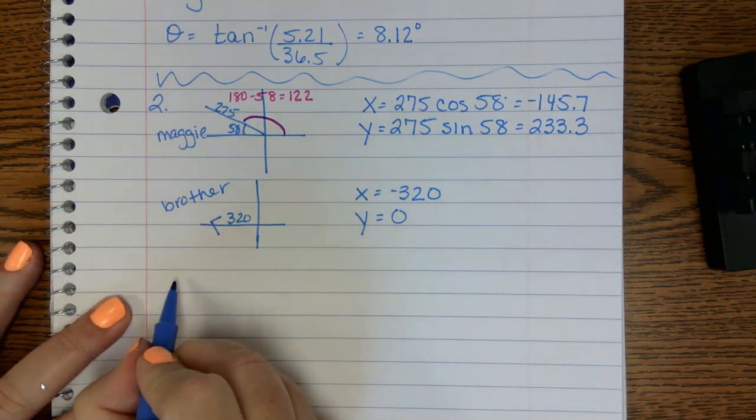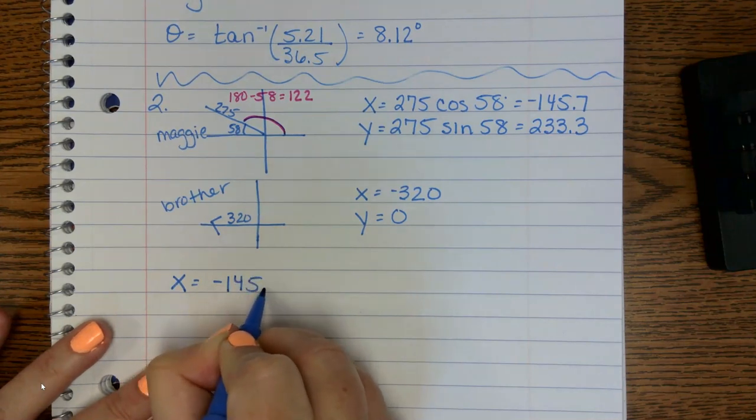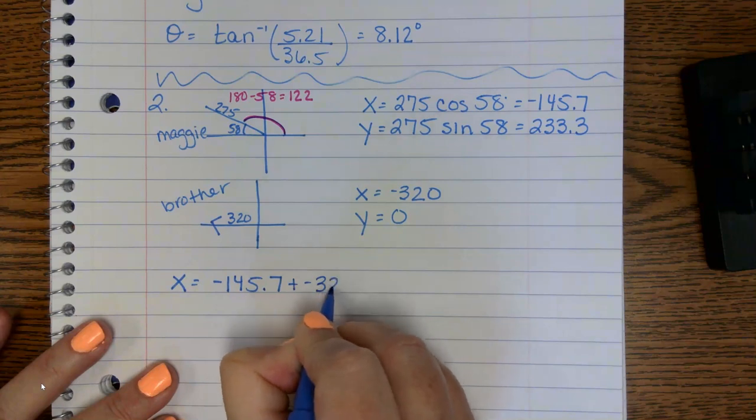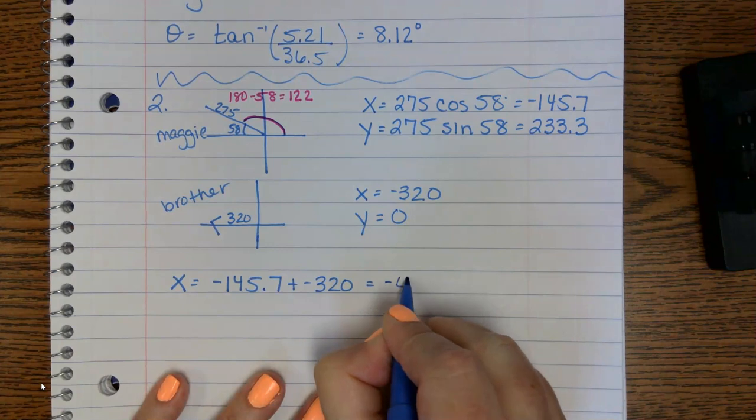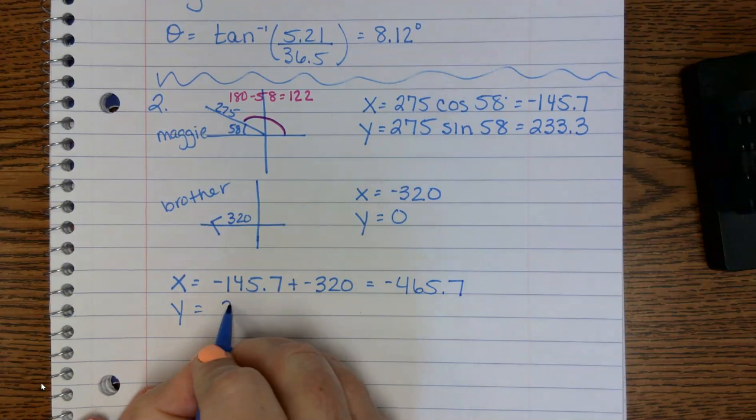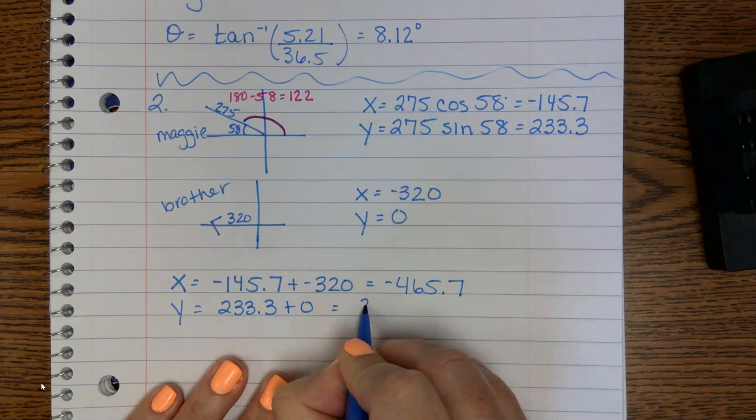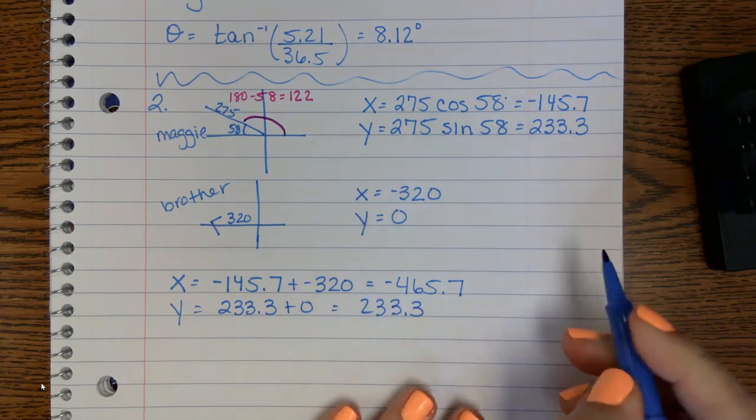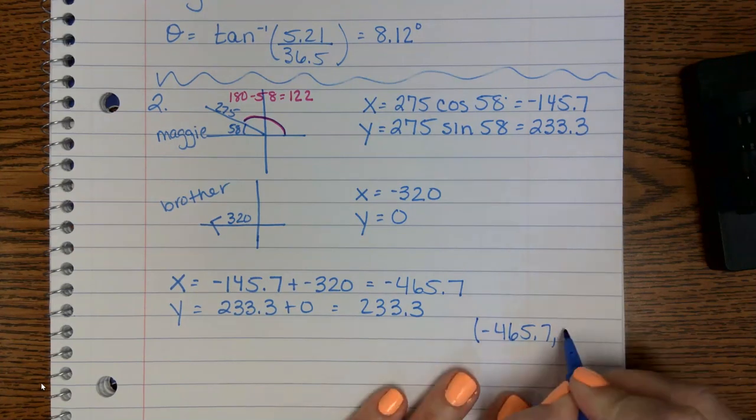So now we're going to do the same thing. We're going to add all of our x's together. So negative 145.7 plus negative 322. And I get negative 465.7 and 233.3 plus 0 is 233.3. So we have negative 465.7 and 233.3.